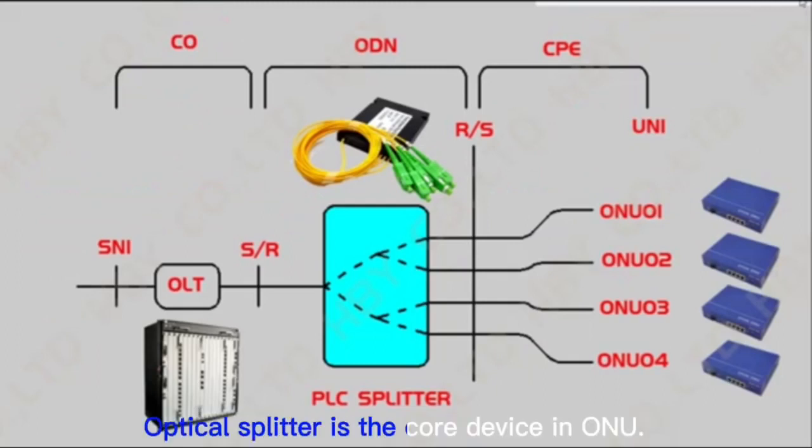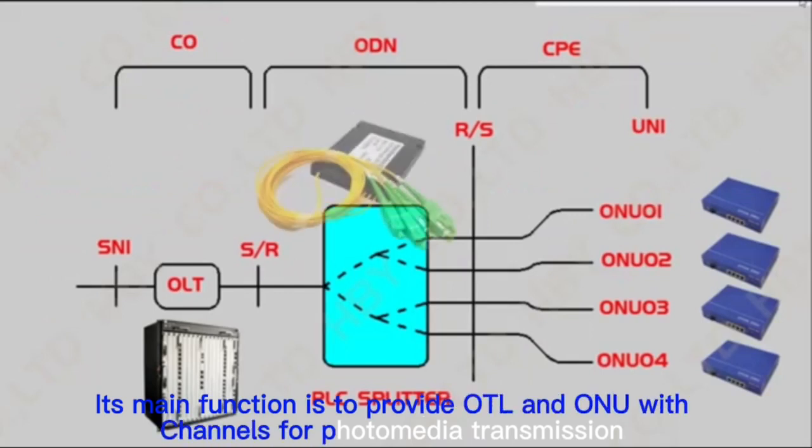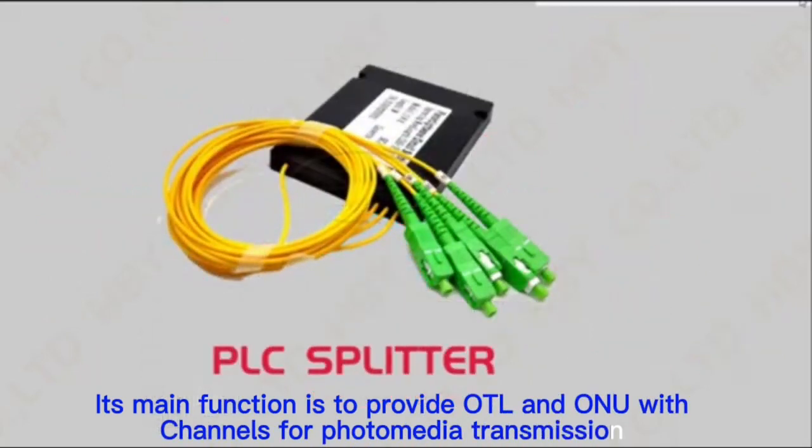The optical splitter is the core device in ONU. Its main function is to provide OLT and ONU with channels for optical media transmission.